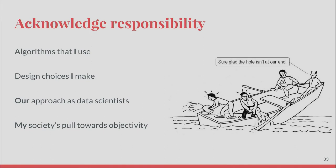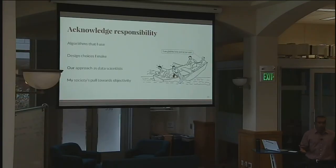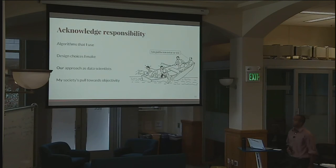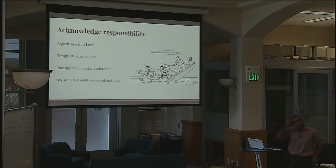We can start by simply acknowledging responsibility instead of saying these are mistakes other people have made. Acknowledge that the algorithms we choose and the design choices we make will have some sort of unintended consequence if we don't think carefully. They will always have consequences — unintended or unacknowledged unless we go out of our way to address them. Our approach as data scientists to generally collect a lot of data, quantify things, and assume we'll get the right results out of it is something we need to be very careful of, lest we go too far. Our society's pull toward numbers and quantification can have long-term consequences like it did in education — it's going to be a long time recovering from that.